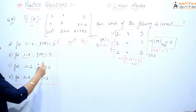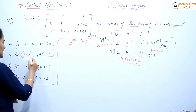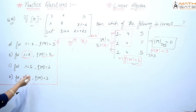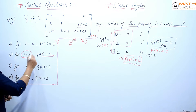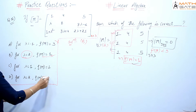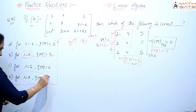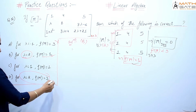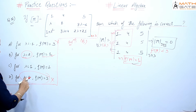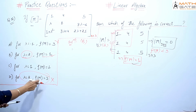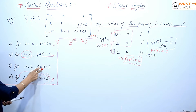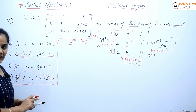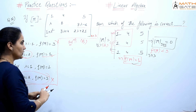So option B says: for lambda equals 2, rank is 1 — and we have confirmed that is correct. Option B is looking correct. Now I have to check option C to be sure.